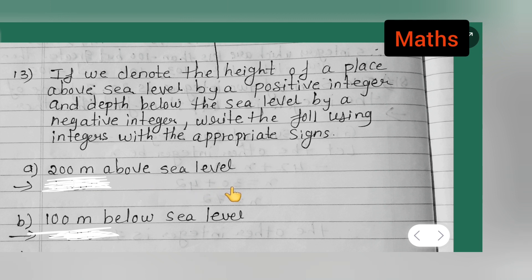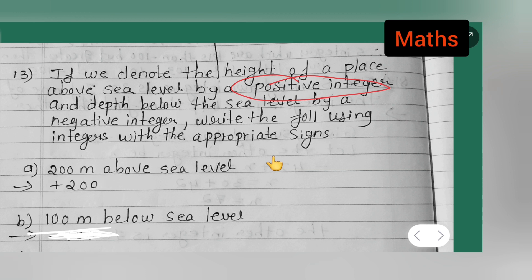For 200 meters above sea level — above sea level is denoted by a positive integer, so the answer is +200. The second one is 100 meters below sea level.